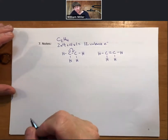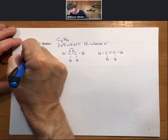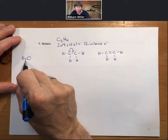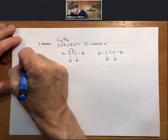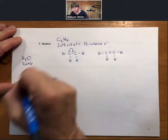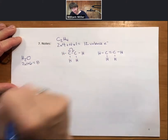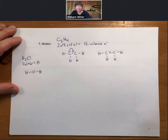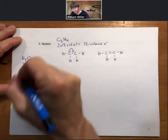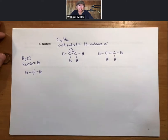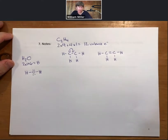Another common example is H2O. We have two times one plus six valence electrons for the one oxygen — eight valence electrons total. Put the oxygen in the center (hydrogen can't be center), and by the time we complete the octet we have used up all eight of our valence electrons.